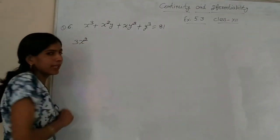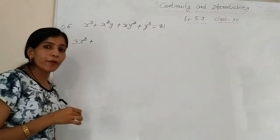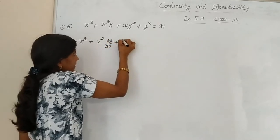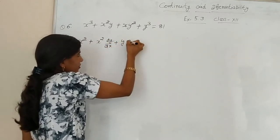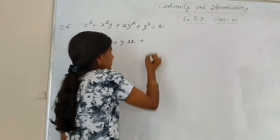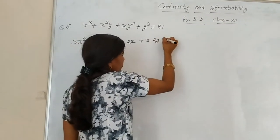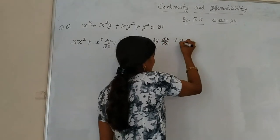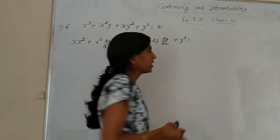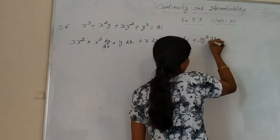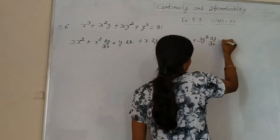What is the derivative of x³? It is 3x². Now for x²y, we apply the product rule: x² as it is times dy/dx, plus y times derivative of x² which is 2x. For xy², product rule again: x as it is times derivative of y² which is 2y times dy/dx, plus y² times derivative of x which is 1. For y³, it gives 3y² times dy/dx. The derivative of constant 8 is 0.